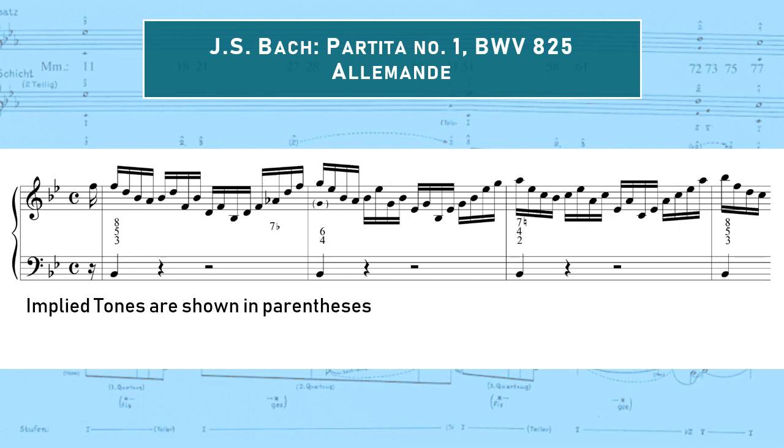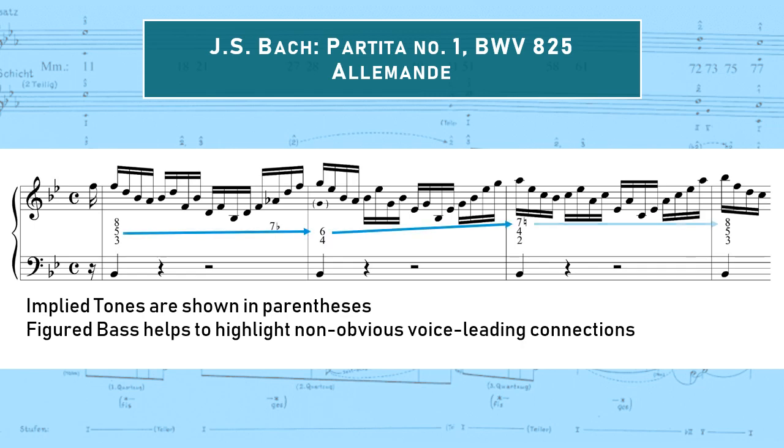In the first video, I mentioned that part of Schenker's goal was to explain the discrepancy between strict composition and the free compositions of the common practice era. The imaginary continuo helps us to partially explain that discrepancy. Thinking in terms of figured bass, for instance, helps to highlight non-obvious voice leading connections. At first glance, this piece seems very leapy, a far cry from the predominantly stepwise motions of Fuchs's species counterpoint. But if we look at the upper voice structures that are implied by the figured bass symbols, we can pick out coherent stepwise patterns, such as this ascent in the top voice from F to G to A to B-flat. As we listen to the passage a second time, try to focus your attention on this long-term, stepwise connection.